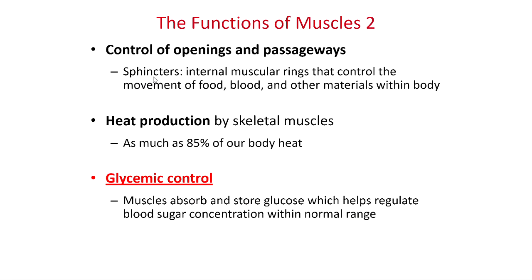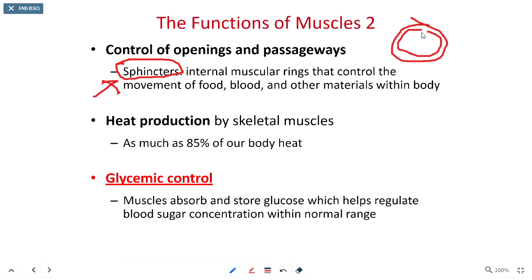Our muscles control the passages and openings — specifically sphincters. When we think of these, think of circular muscles. The muscle fibers have a circular orientation with one band of connective tissue they're all connected to. It's also worth mentioning that when we use our muscles, we make heat. The more you use your muscles, the more heat we generate.